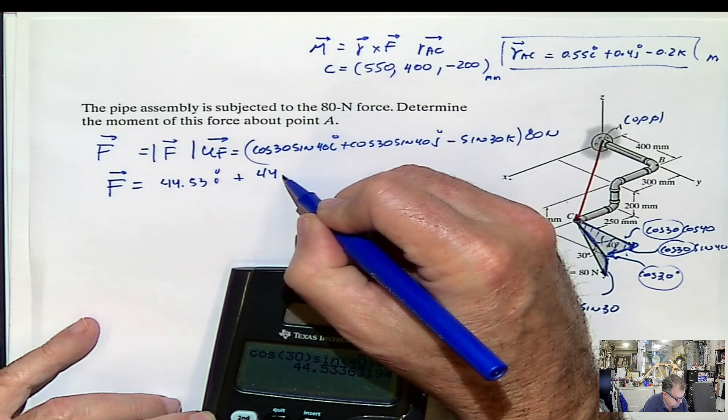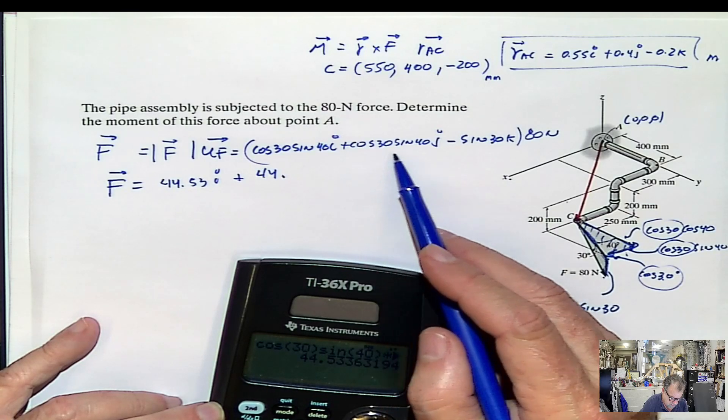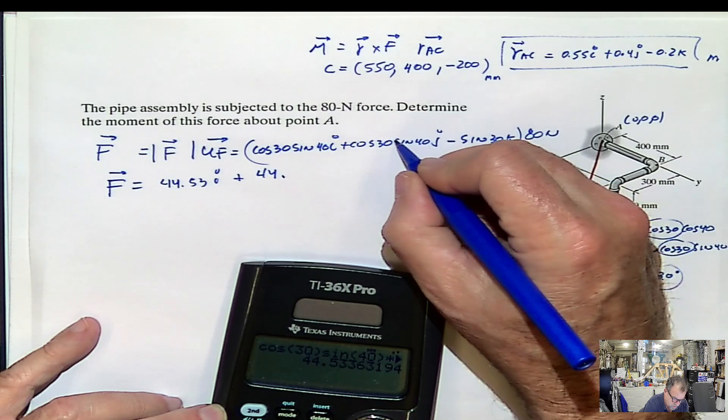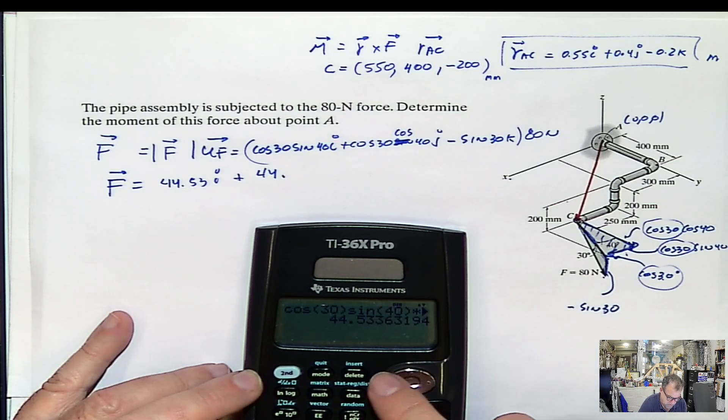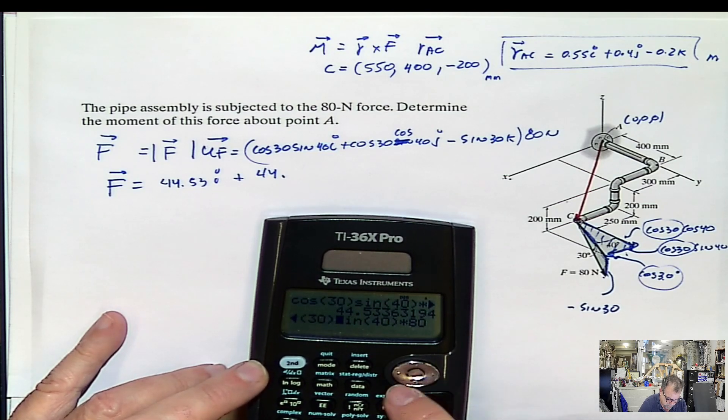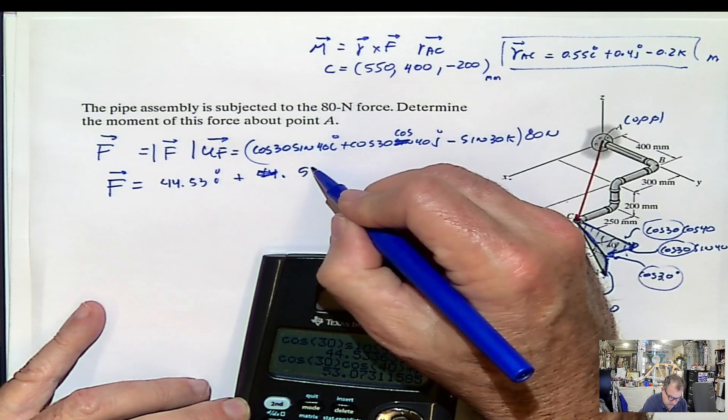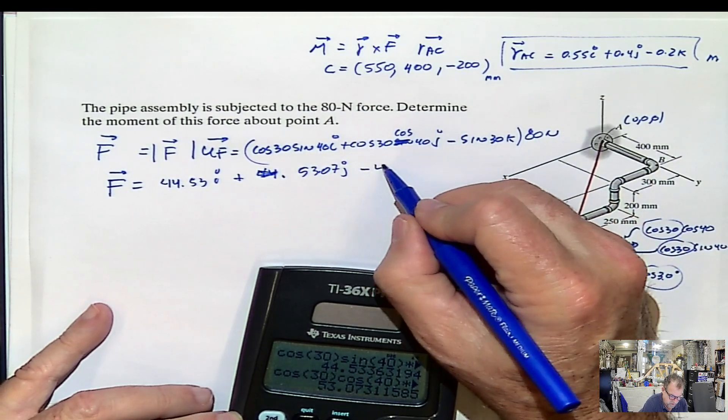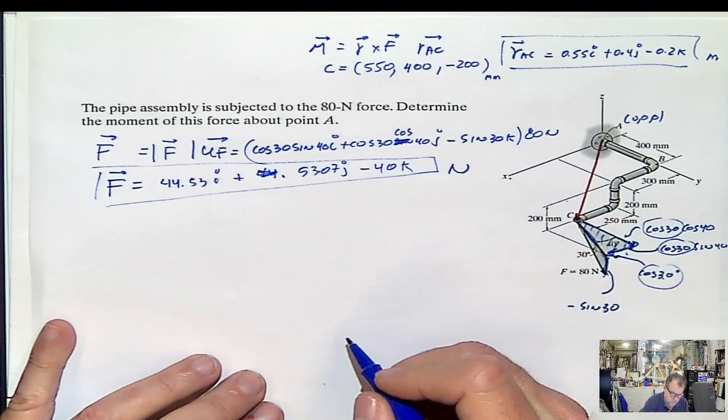I did the same thing. And this is cosine 30 cosine 40. Cosine 40. Why didn't you tell me, guys? Cosine 40. I just happened to have got the same value here. I got freaked out. Cosine 40, cosine 40. Now, it's a different value. 53.07 J. And sine 30 is 0.5 times 40, negative 40 K. And I have the force in newtons.